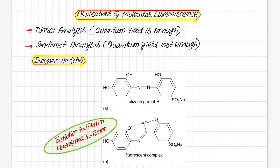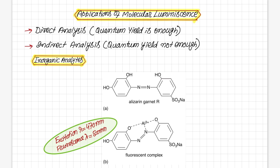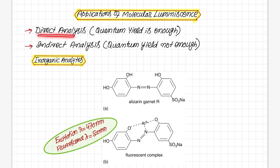If we talk about the quantitative applications of molecular luminescence spectroscopy, there are two types of analysis which we perform. Number one is direct analysis and number two is indirect analysis. In direct analysis, we directly measure the molecule which will undergo fluorescence or phosphorescence.